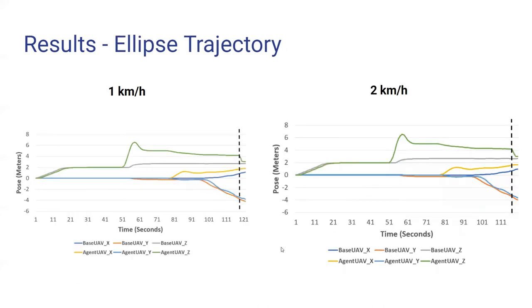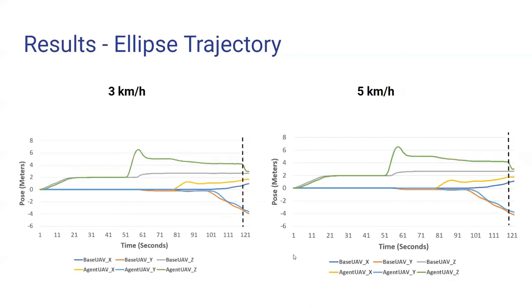And here you could see the results with the ellipsoidal trajectory for the 1 km per hour and 2 km per hour, where the agent UAV is tracking the ellipsoid along the x and y-axis, and the black dashed line at which the descent has started and the landing occurs. And a similar performance with the 3 km per hour as well as the 5 km per hour velocities.